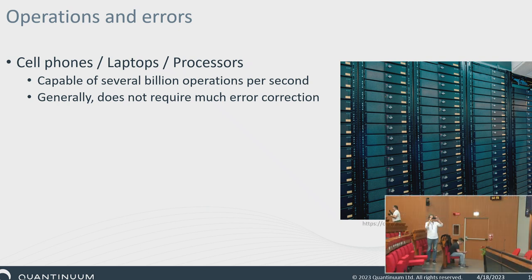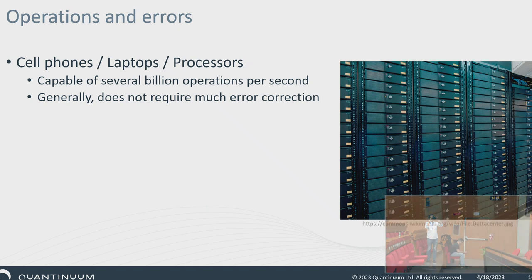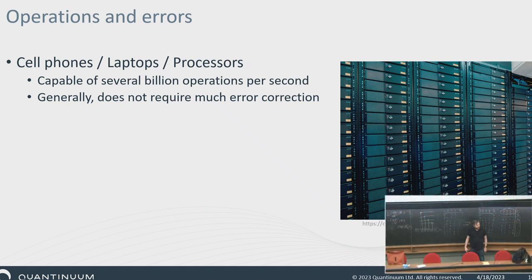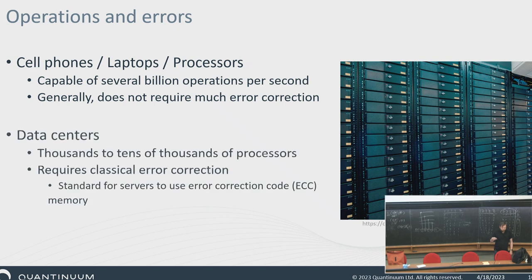So, quantum error correction. On the classical side of things, they also have to deal with error correction. For the most part, for cell phones and laptops and processors, they only do several billion operations per second. There are a lot of transistors in your laptops and cell phones, but given the error rates of transistors, for the most part you don't have to deal with error correction. To some degree you have to deal with SSD hard drives as well as DRAM memory — the cells go out, or the DRAM is sensitive as everything gets squashed down. But generally you don't have to worry about it for everyday consumer stuff.